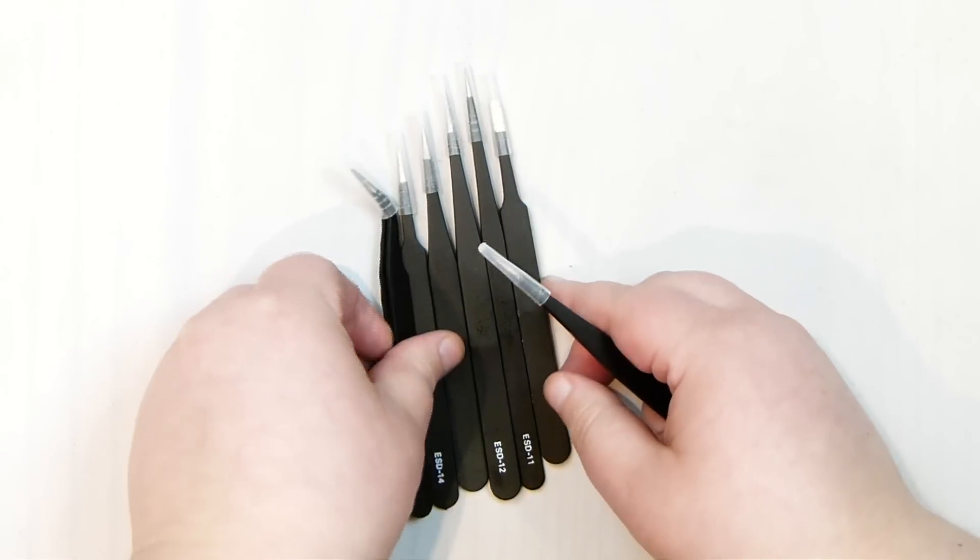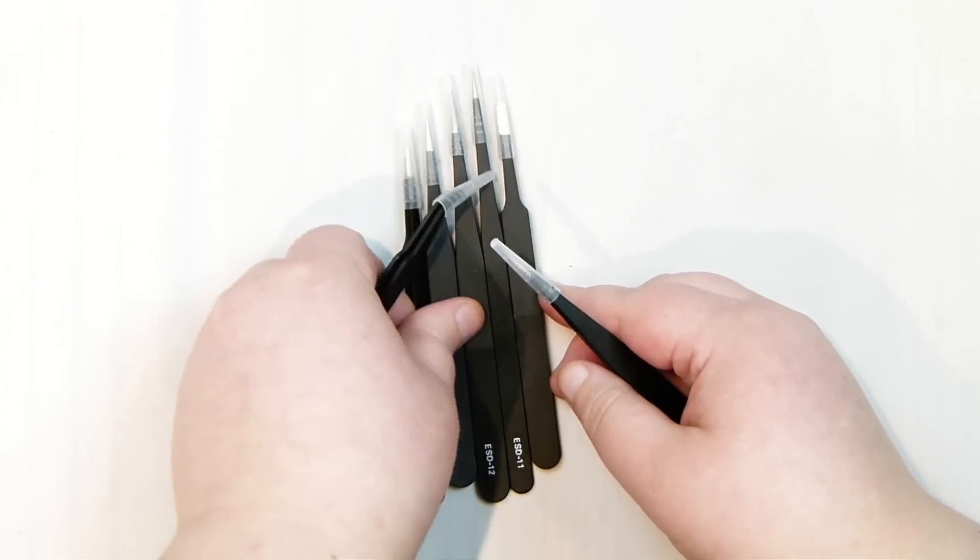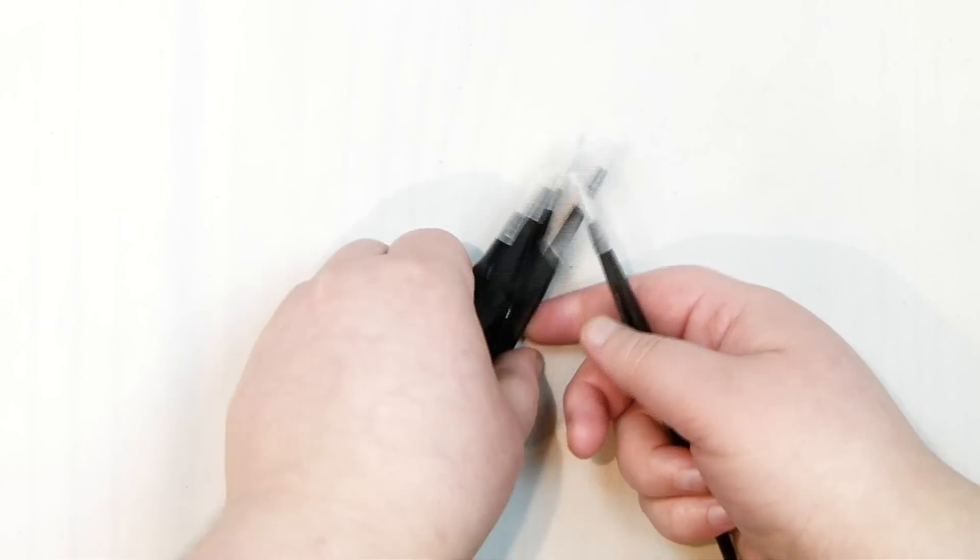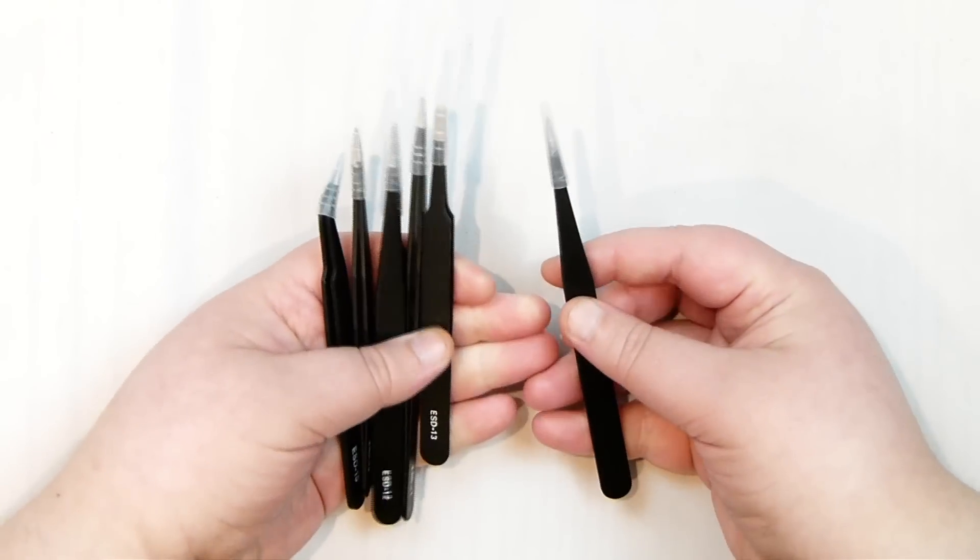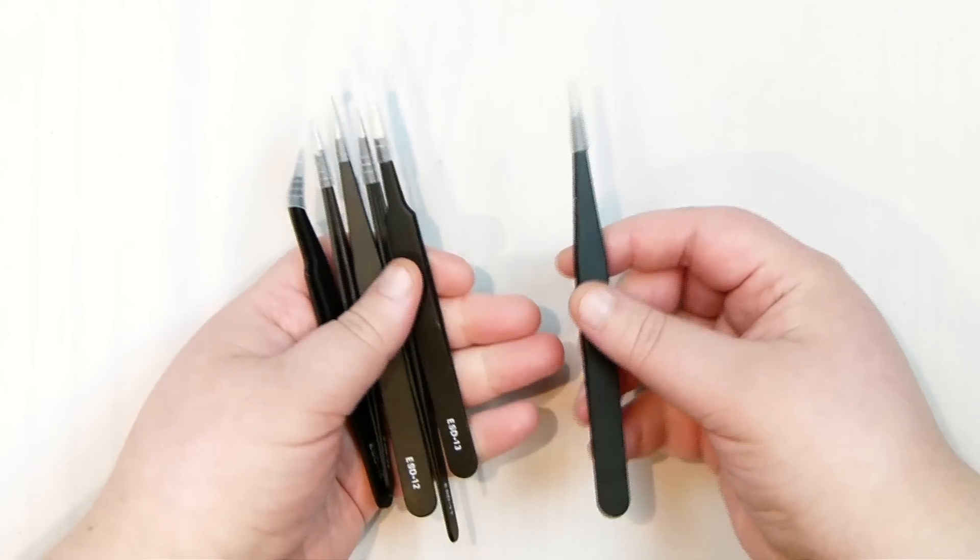So using something like these can help prevent that too much. Obviously you can still damage it, but it will make it a little bit easier as you can really grab hold of it and get in there with the fine tweezers. So it's just handy to have available to you if you would need it.